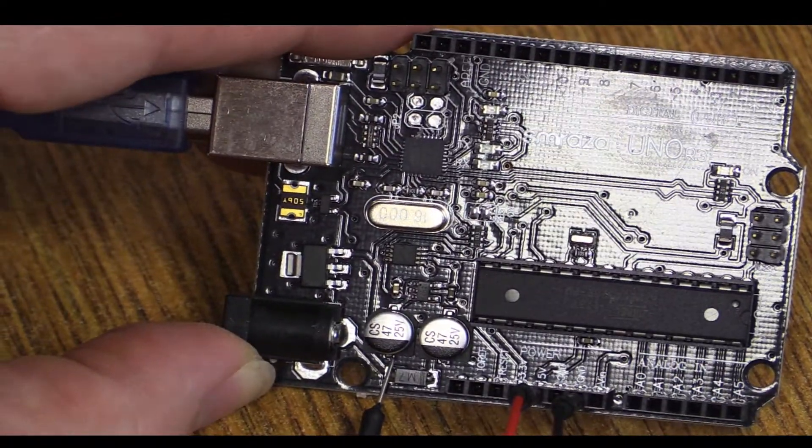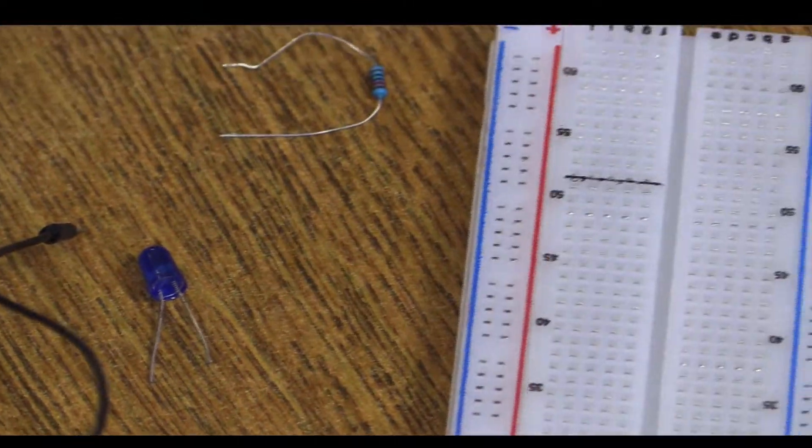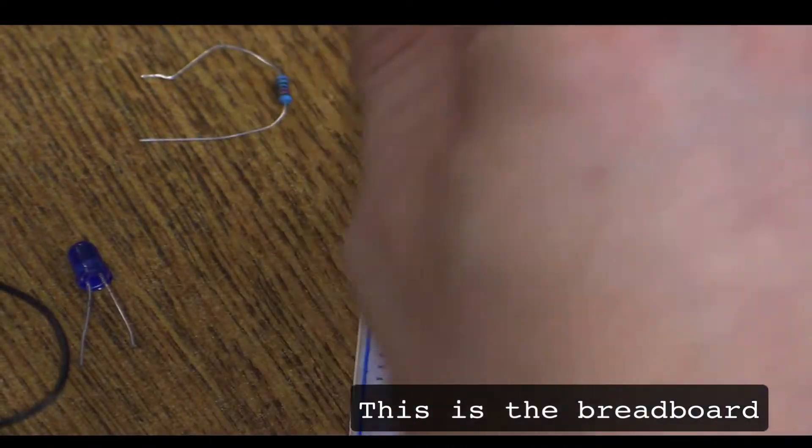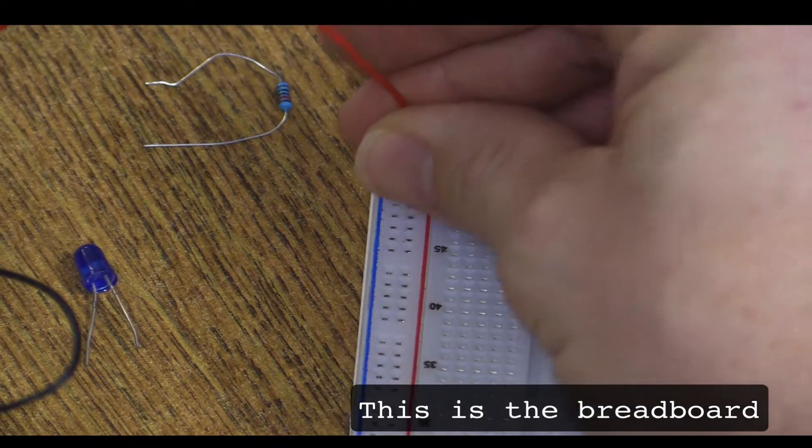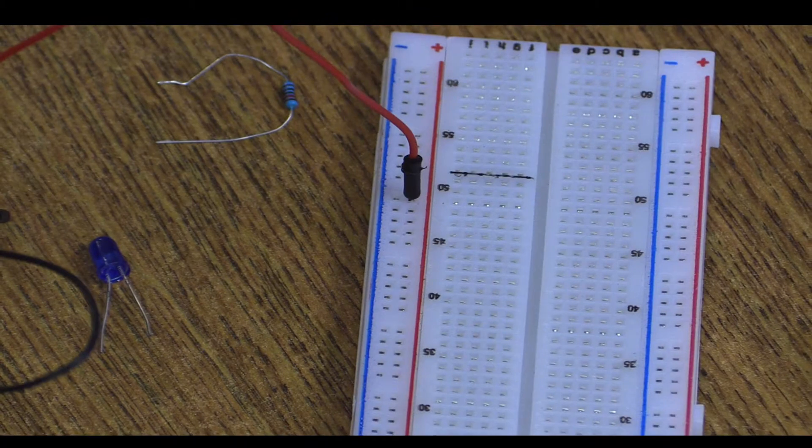Now we're going to wander over to our breadboard. You see here where it says plus and there's a big red line, that means all of these are connected. So if I put the power into one of these holes, it means that every hole on that side next to the red line now has 5 volts of power in it.